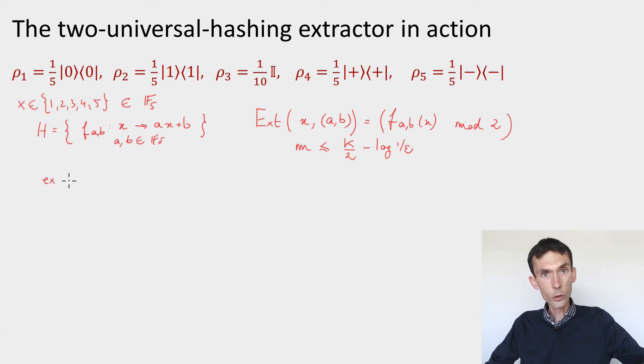Let's take an example choice of a seed at random. Let's take a and b to be equal to 2 and 3 and let's do the computation.